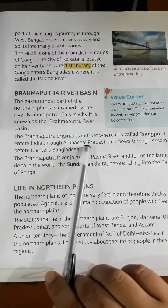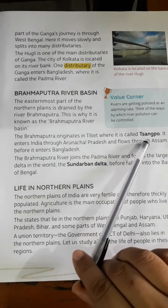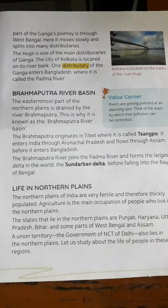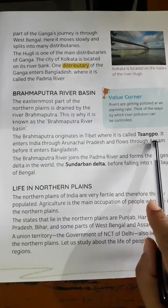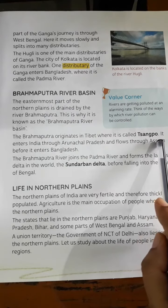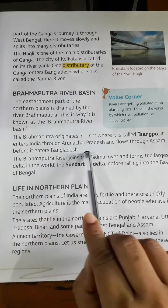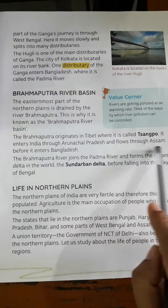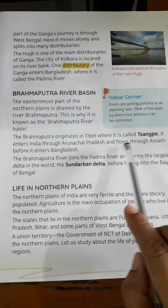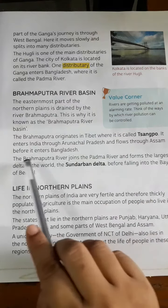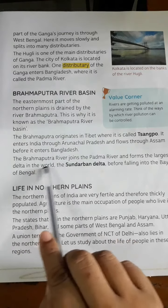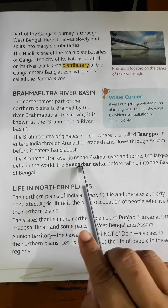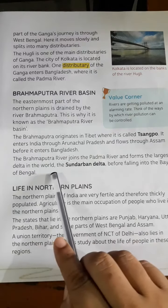The Brahmaputra originates in Tibet, where it is called the Tsangpo. It enters India through Arunachal Pradesh and flows through Assam before entering Bangladesh, where it joins the Padma River.